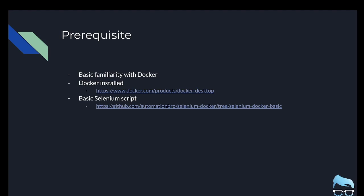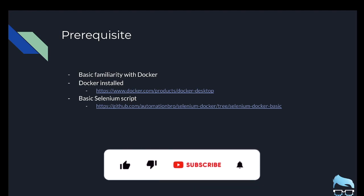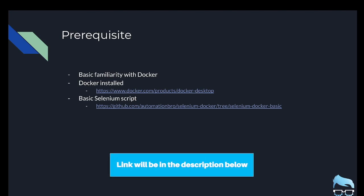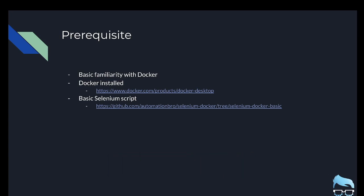First off, our prerequisites remain the same — these are the same ones I mentioned in my previous Docker videos. If you haven't checked that out, make sure to do that so you can understand how Docker works with Selenium and how you can set up Selenium Grid with Docker. You need to have some basic familiarity with Docker, have Docker installed, and have a Selenium script to execute your tests on.